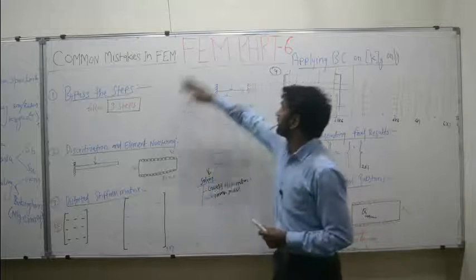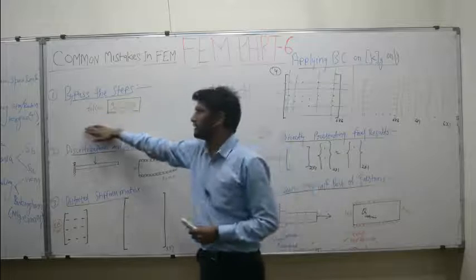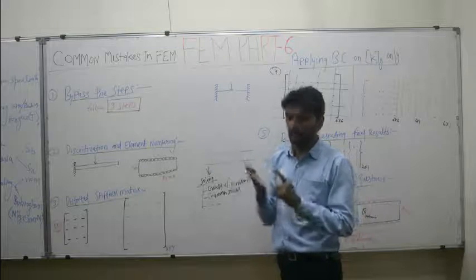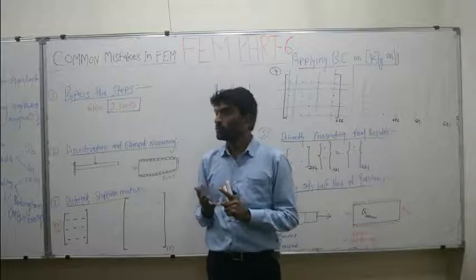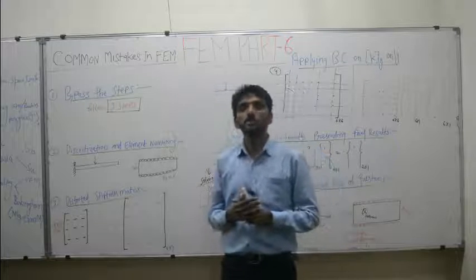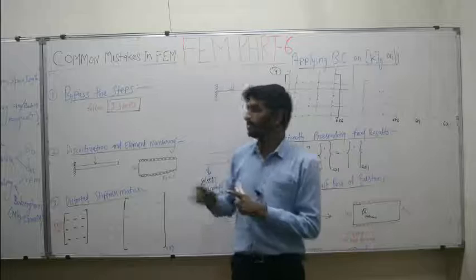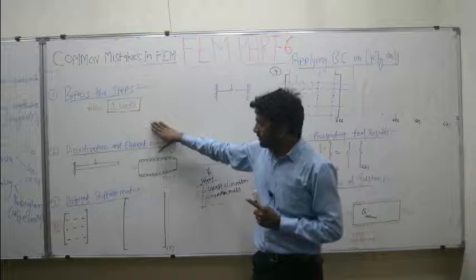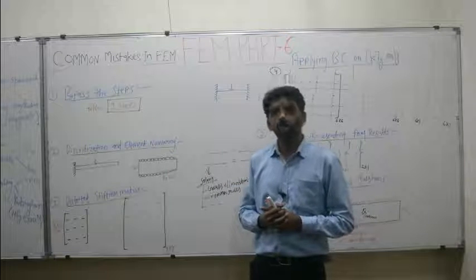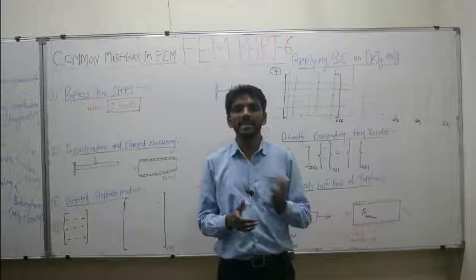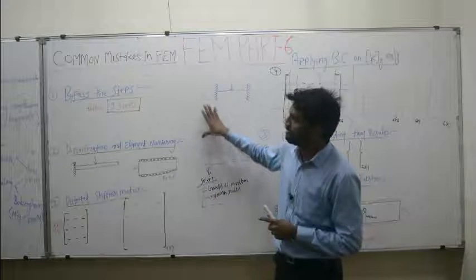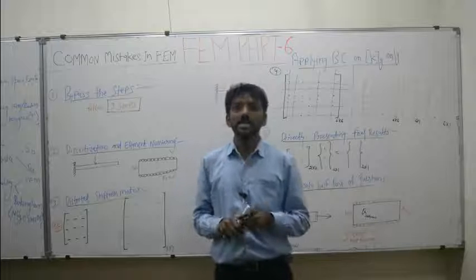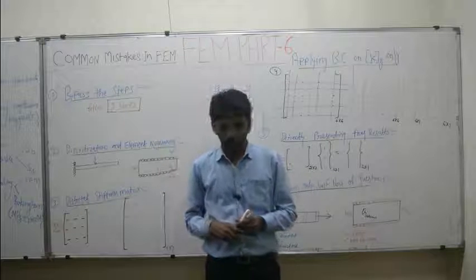Hello everyone, we are here again for finite element method part 6. In the earlier 5 parts, we were discussing: part 1 covered the basic 9 steps in finite element analysis; part 2 discussed forming the global stiffness matrix; part 3 covered applying boundary conditions for structural problems; part 4 for heat transfer problems; and part 5 covered node numbering and finding the orientation of each element for plane truss problems.